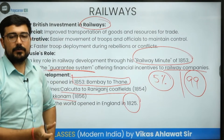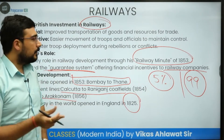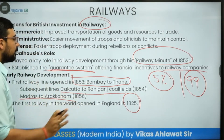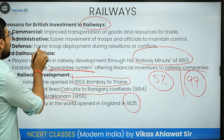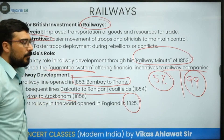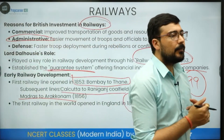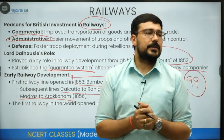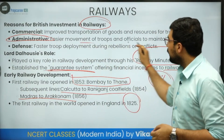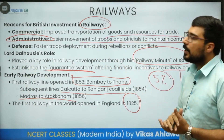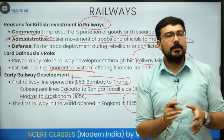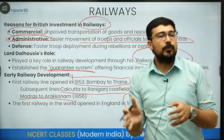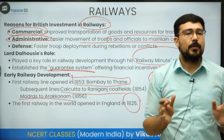Historian Sabhyasachi Bhattacharya says Indian railways were a perfect example of private enterprise at public risk — all the risk was borne by the public while profit went to private parties. The major reason behind the introduction of railways was not commercial but administrative: they wanted to ease the movement of troops and officials to maintain control. Even within commerce, the railway was meant to improve the commerce of England, not of India.